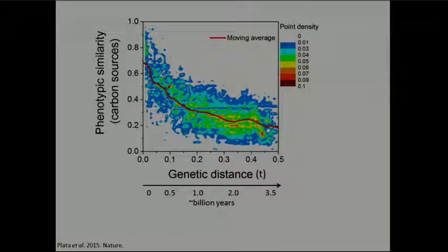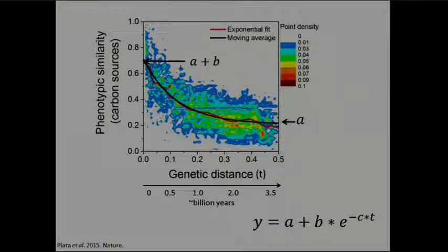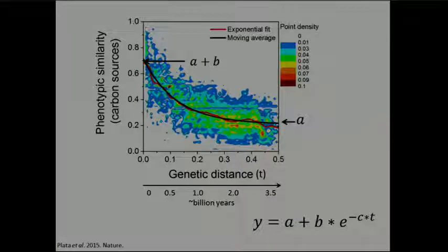We found a simple exponential model that fits this average behavior nicely. In the equation, y represents phenotypic similarity between two bacteria; a is related to long-term conservation of phenotypic properties; b is related to the fast initial divergence; and there is a time constant indicating how fast you go from initial to final conservation. One interpretation is that a constant proportion of phenotypic properties changes per unit time.